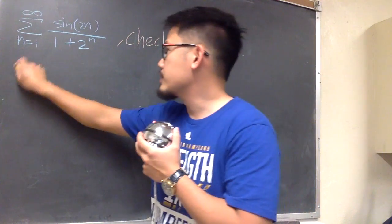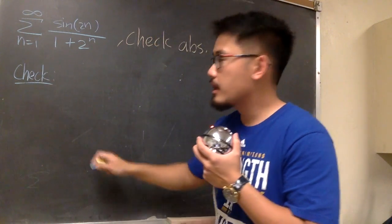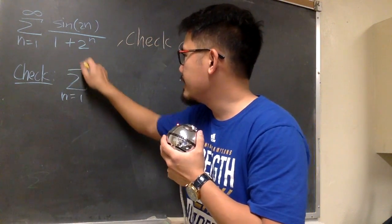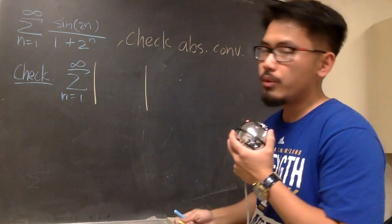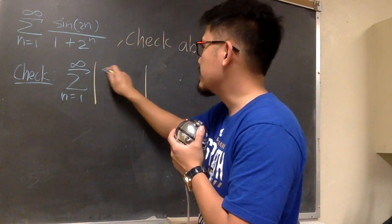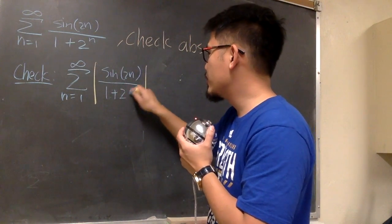Let me show you how it works. We are just going to check sigma where n goes from 1 to infinity, and I will put down an absolute value, and then we'll put down this inside, sine of 2n over 1 plus 2 to the n.